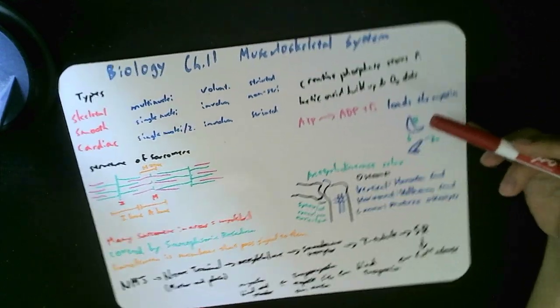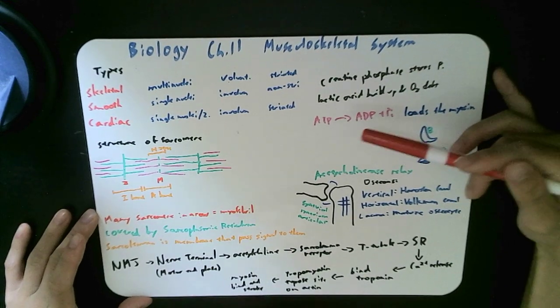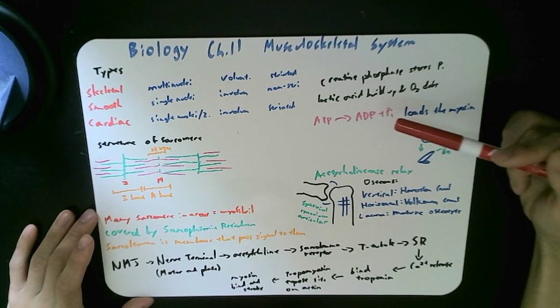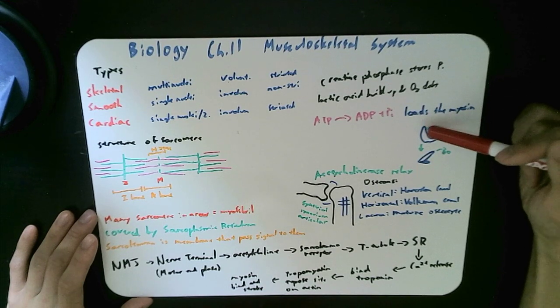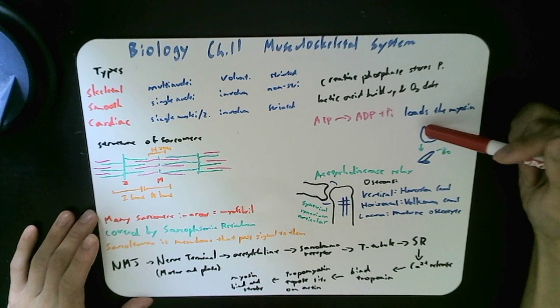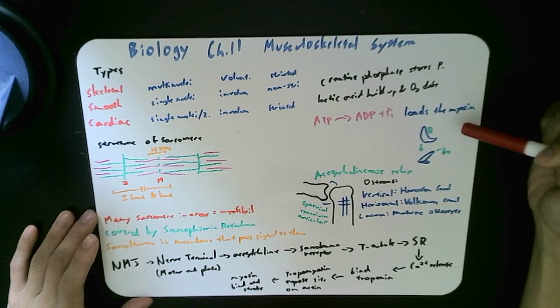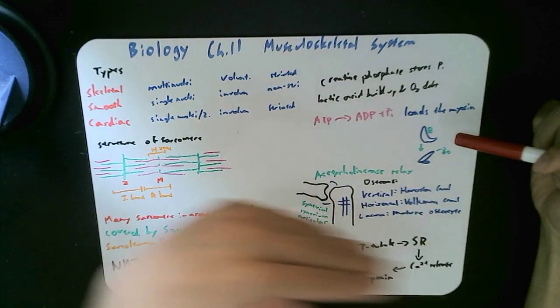So how it works is that ATP is converted into ADP and PI. And ADP and phosphate is on the little trigger itself. And when it gets released, both of them gets released, it triggers the power stroke.